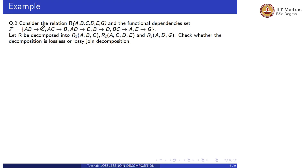Question 2: Consider relation R having attributes A, B, C, D, E, G and functional dependency set: AB → C, AC → B, AD → E, B → D, BC → A, and E → G. Let R be decomposed into R1 = ABC, R2 = ACDE, and R3 = ADG. Check whether the decomposition is lossless or lossy.